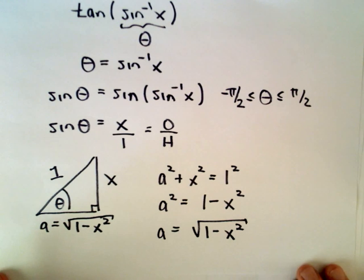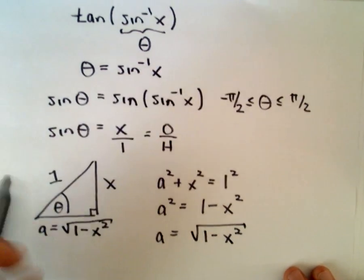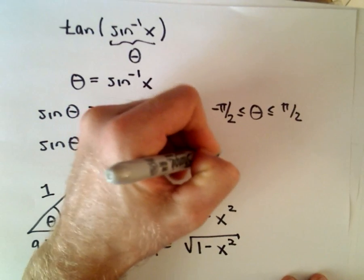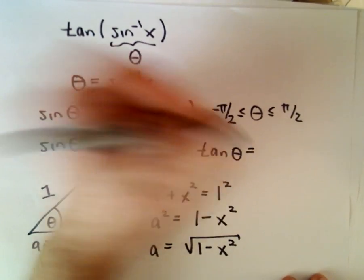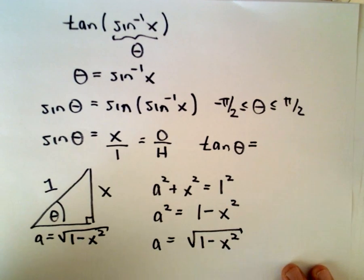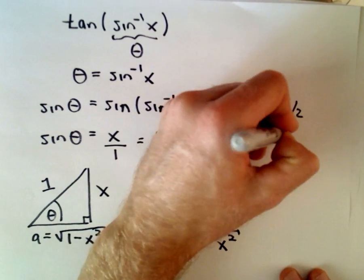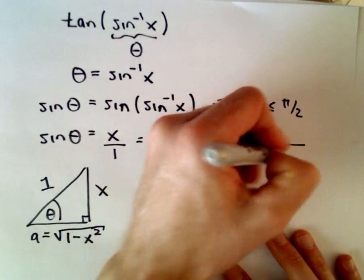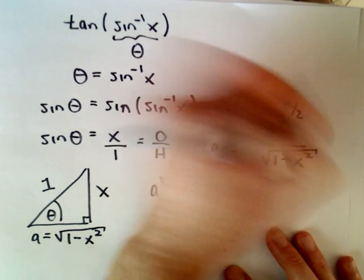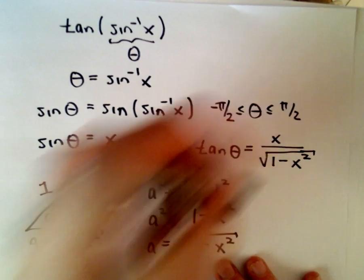In this case now, it says tangent. So really we're trying to evaluate tangent of theta, or simplify that expression, tangent of theta. And in this case, tangent we know is the opposite over the adjacent. So we'll have x over the square root of 1 minus x squared. And that's now going to be our simplified expression.